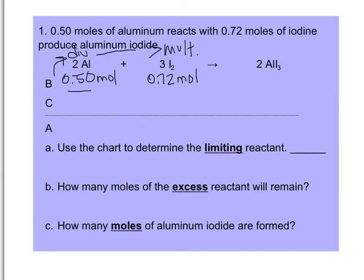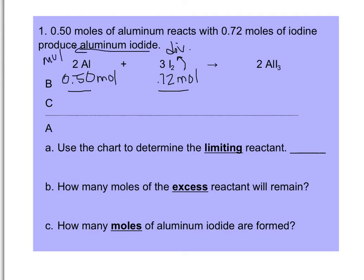So we're going to erase the calculations we did — this is the joy of these programs — and start over again. This time, I'm going to start with the iodine and assume that it runs out. I take 0.72 moles of iodine, divide by 3, then multiply by 2, which gives 0.48. That value — 0.48 — represents the amount of aluminum that gets used up as all of the iodine is consumed, and I place it underneath the aluminum column.